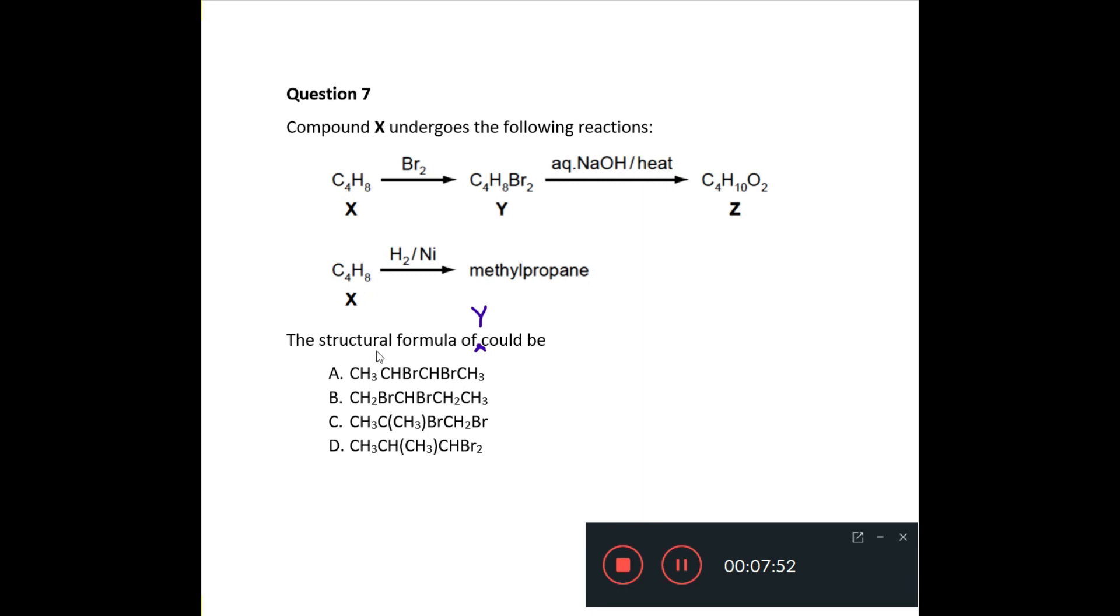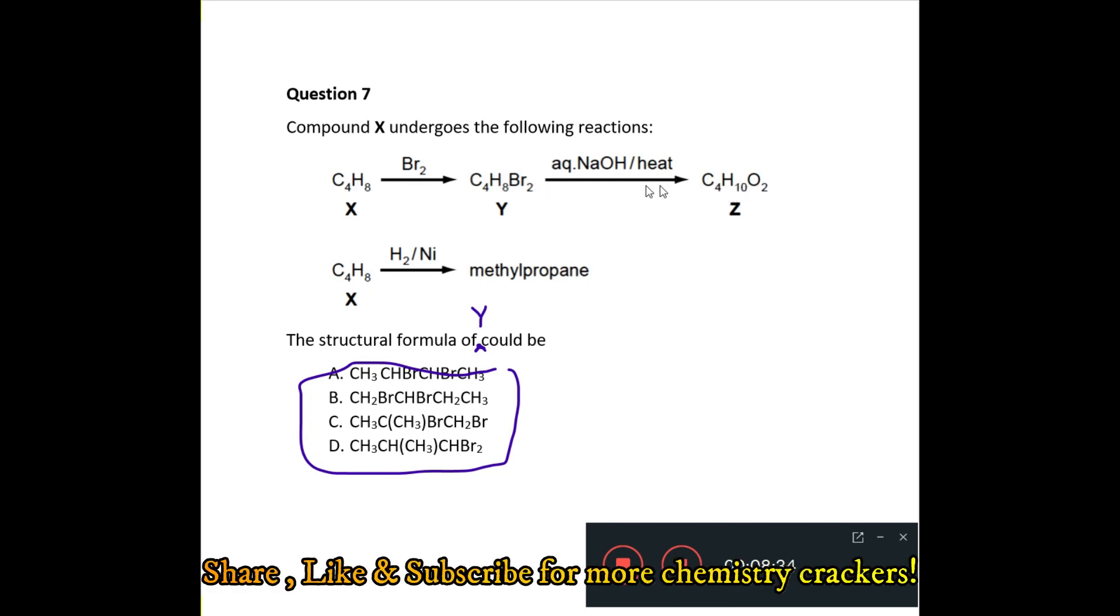Question 7 says, dealing with the same synthetic reaction, X goes to Y to Z and X goes to methylpropane. The structural formula of Y could be, and it gives you four options here. Now, what you'd want to do is to have a look at both synthetic pathways. So, I would go X to Y, X is C4H8, and Y is C4H8Br2, and Z is C4H10O2. Now, that doesn't give you much information about the actual structure of C4H8. Now, C4H8, if you remember, could have several isomers. You have but-1-ene, but-2-ene, and you also have methylpropene.